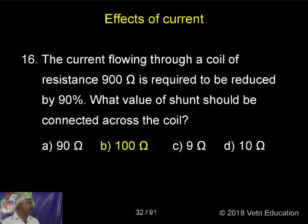The current flowing through a coil of resistance 900 Ohm is required to be reduced by 90 percent. What value of shunt?